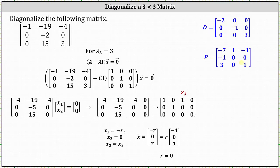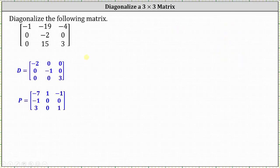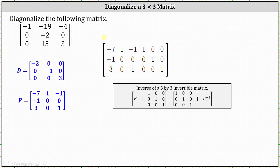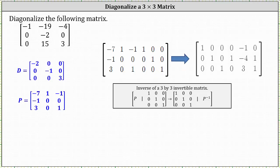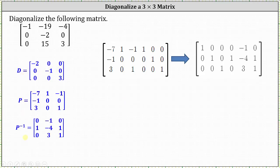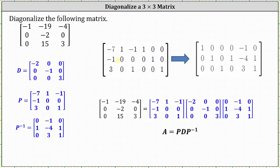Now that we have matrix P, the last step is to find the inverse of matrix P. We use an augmented matrix with matrix P on the left and the three by three identity matrix on the right, then perform row operations until the identity matrix is on the left and the inverse of P is on the right. With matrix D, matrix P, and the inverse of P determined, we have all the information needed, and the given matrix equals P times D times the inverse of P — the diagonalization of the given matrix.